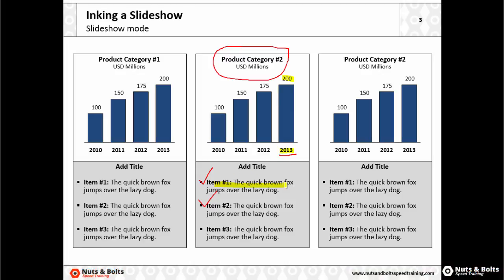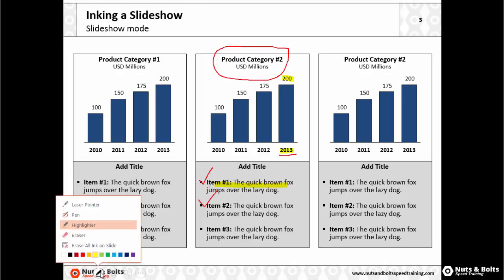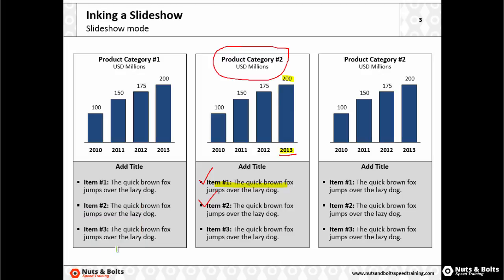In earlier versions of PowerPoint, you can still get the highlighter. You simply need to navigate to the lower left-hand corner of your screen, find the pen icon, click it, and find the highlighter. You can also change the ink color for your highlighter or your pen here — for example, I could choose a light green and continue to highlight things as I bring them up in my presentation.